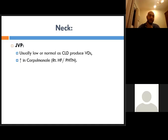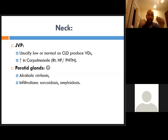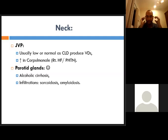At the neck also check the JVP — if it is elevated it gives a clue about the volume status of the patient. This is important in renal failure, in patients with ascites from chronic liver disease, or in renal replacement therapy to determine if the patient is hypervolemic or euvolemic. In the face, checking the parotid is important — it may be enlarged with alcohol use or in infiltrative diseases like sarcoidosis or amyloidosis.